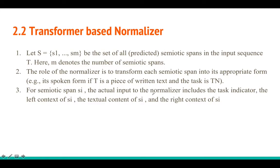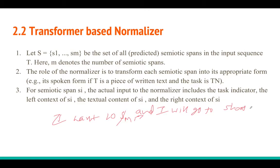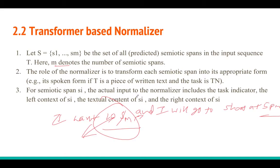For the transformer-based normalizer: if a sentence has m semiotic spans — say, 'I want 10 dollars and will go to the shop at 5 p.m.' has two spans — the normalizer takes each span and generates the corresponding word sequence. The architecture is simple: transformer encoder, transformer decoder, and you train the model.